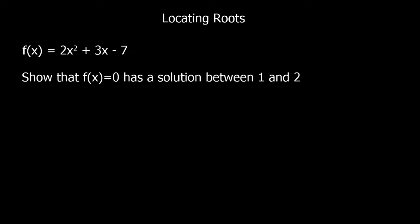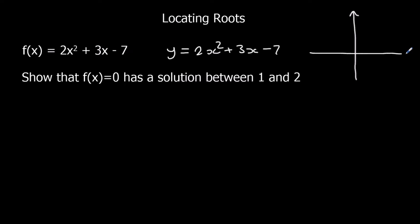This video is about locating roots by looking for a change of sign. We've got a function f(x) = 2x² + 3x - 7. The roots are where the graph of y = 2x² + 3x - 7 crosses the x-axis. So we've got a quadratic graph, and the roots are these points here, where it crosses the x-axis.